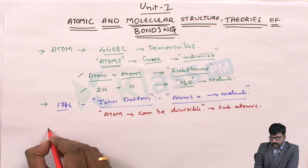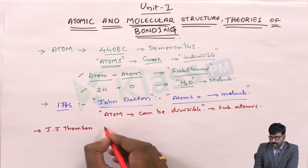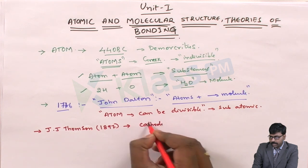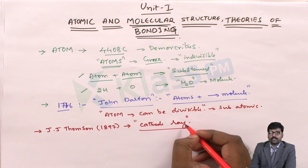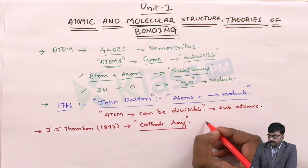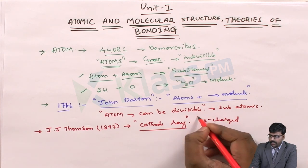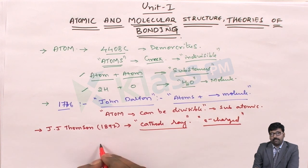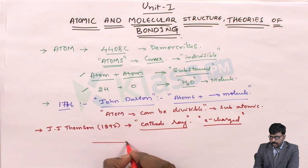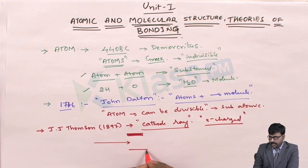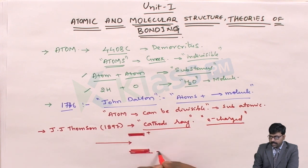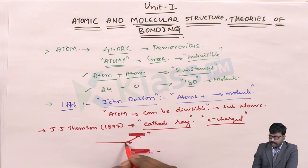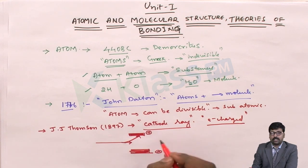Soon after, J.J. Thomson, in the year 1897, conducted an experiment called the cathode ray experiment. In this experiment, when a cathode ray is passed through a charged area, a deflection is observed — the cathode rays are deflected towards the positively charged area and repelled by the negatively charged electrode.